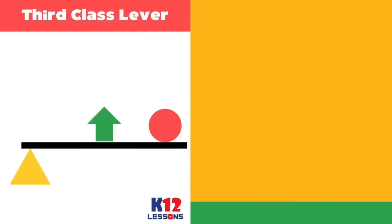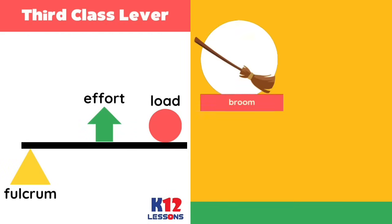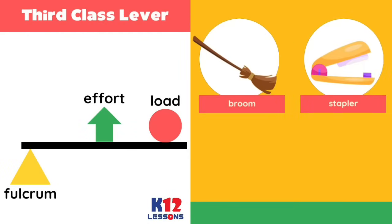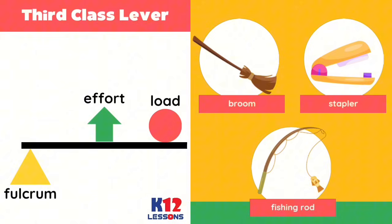Third class lever: the effort is located between the fulcrum and the load. Examples: broom, stapler, and fishing rod.